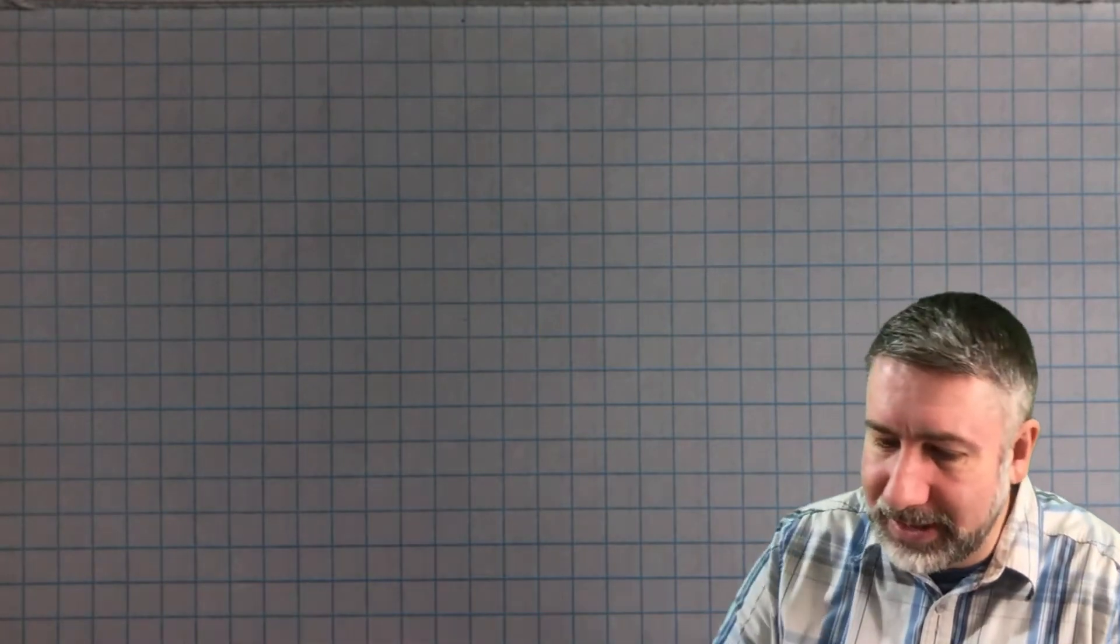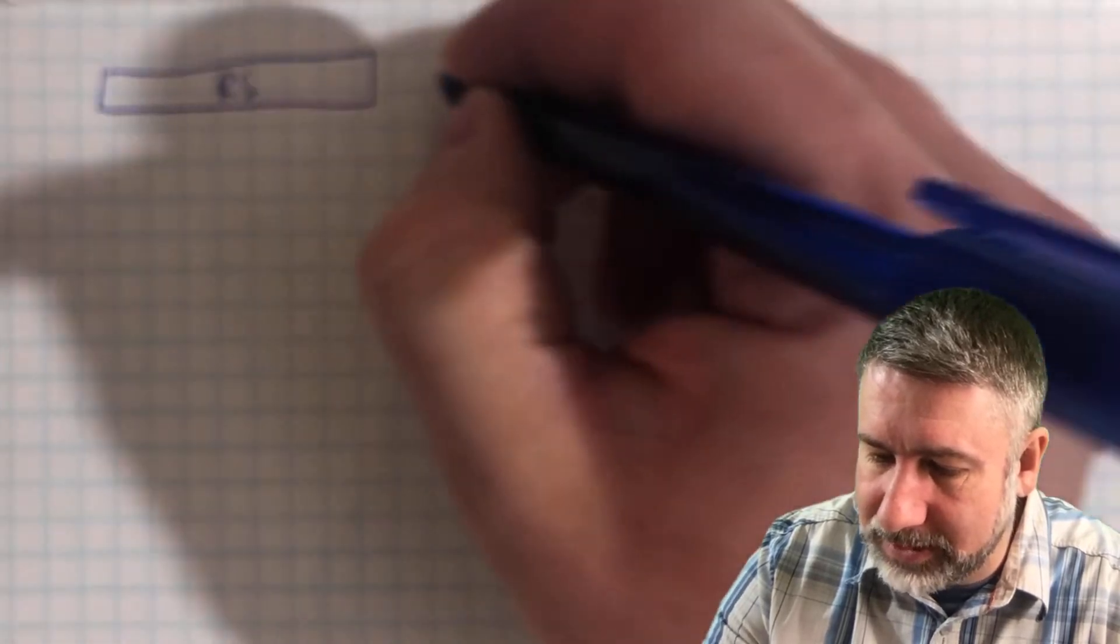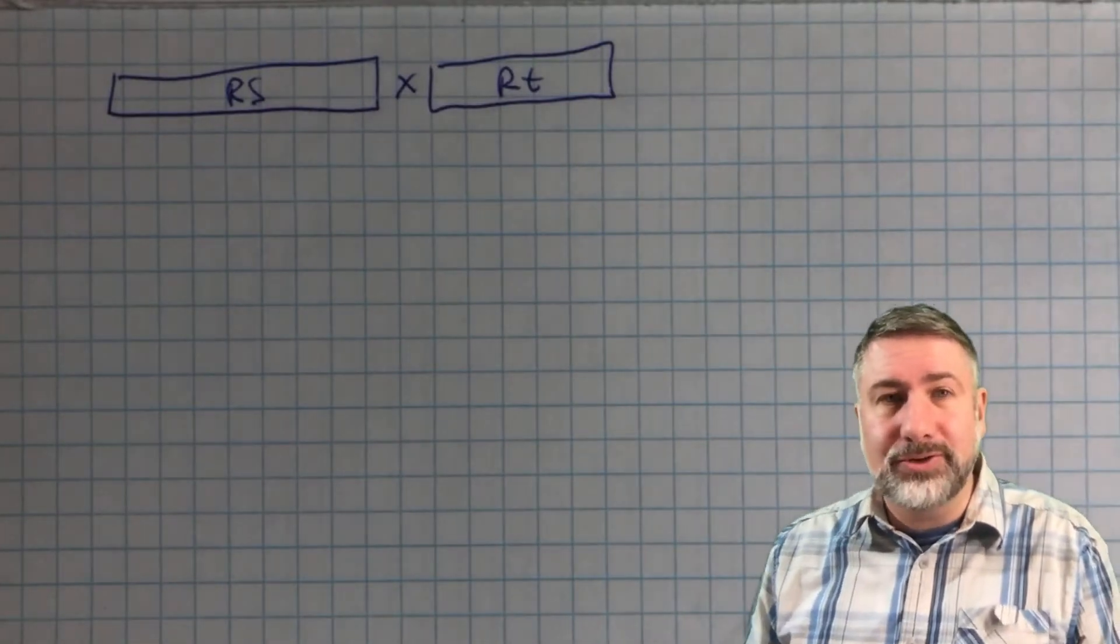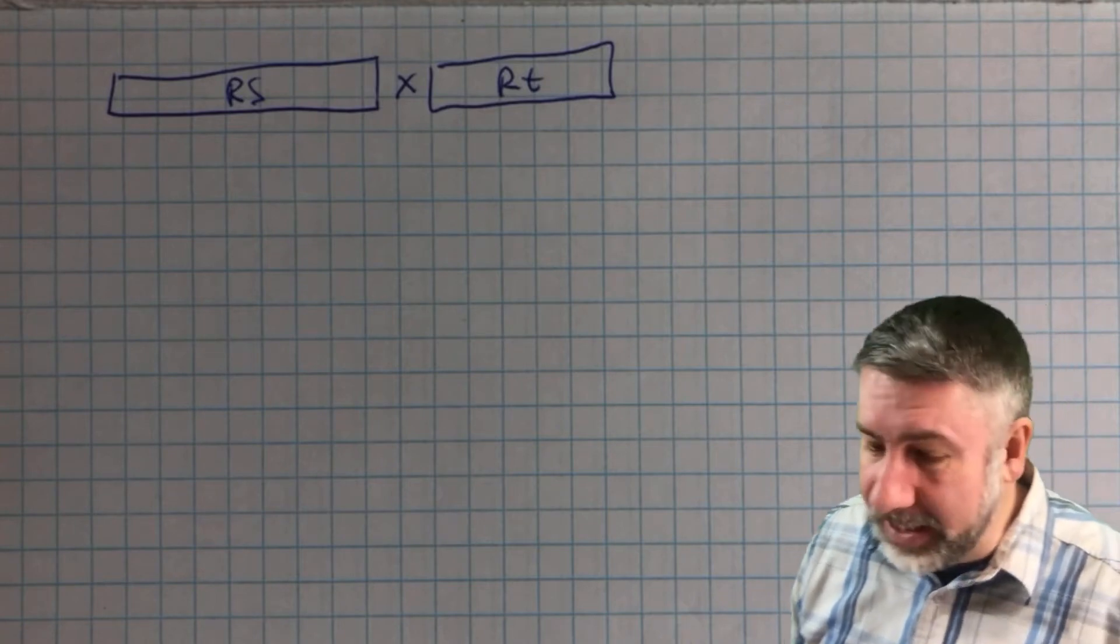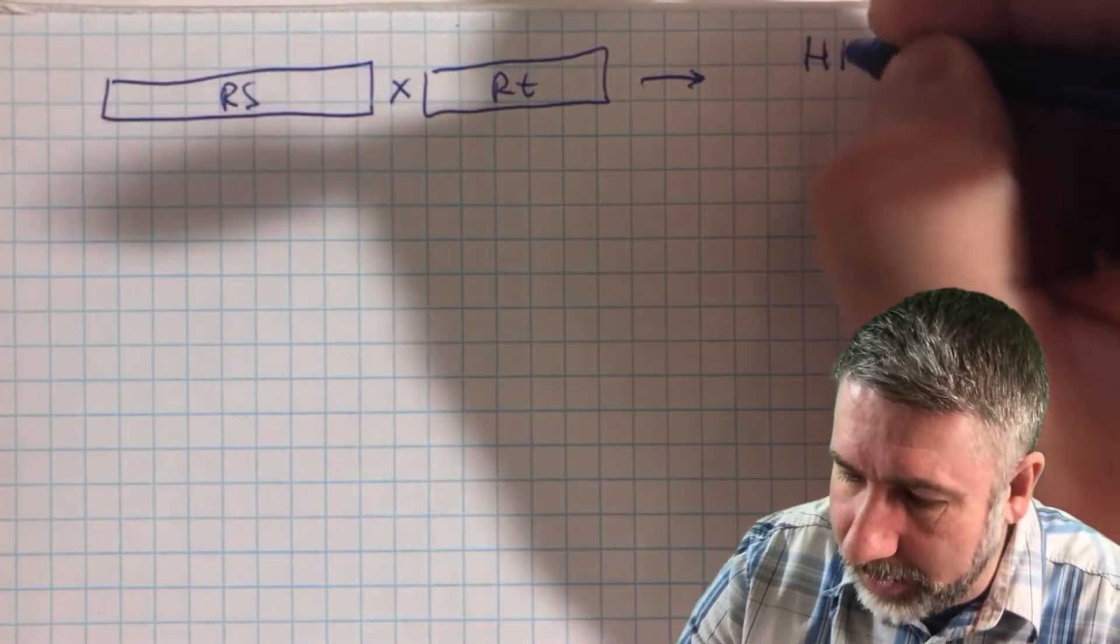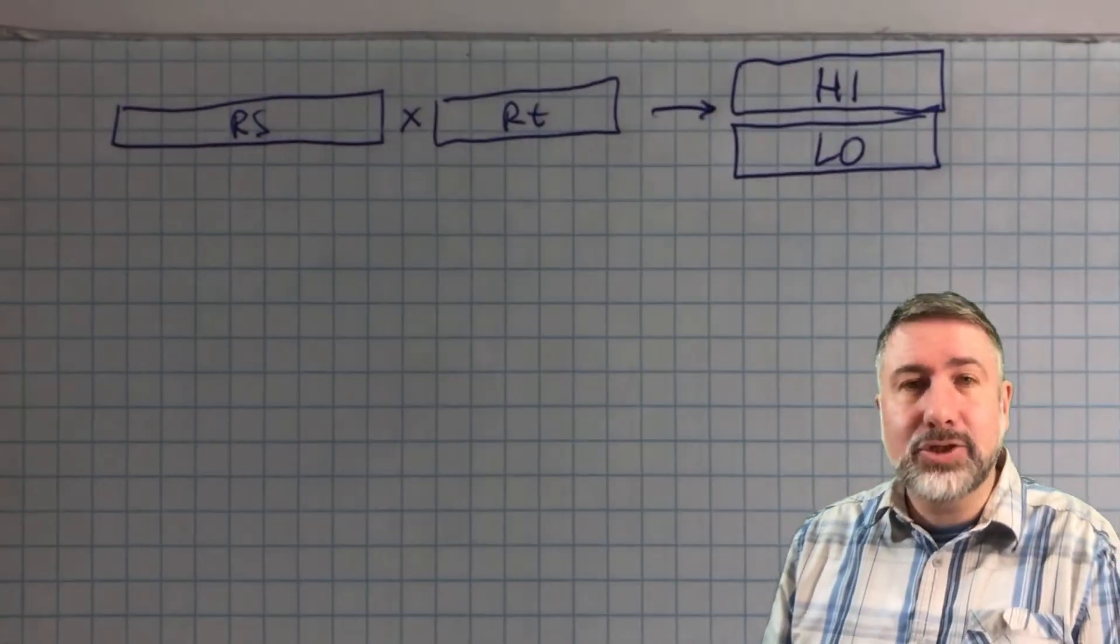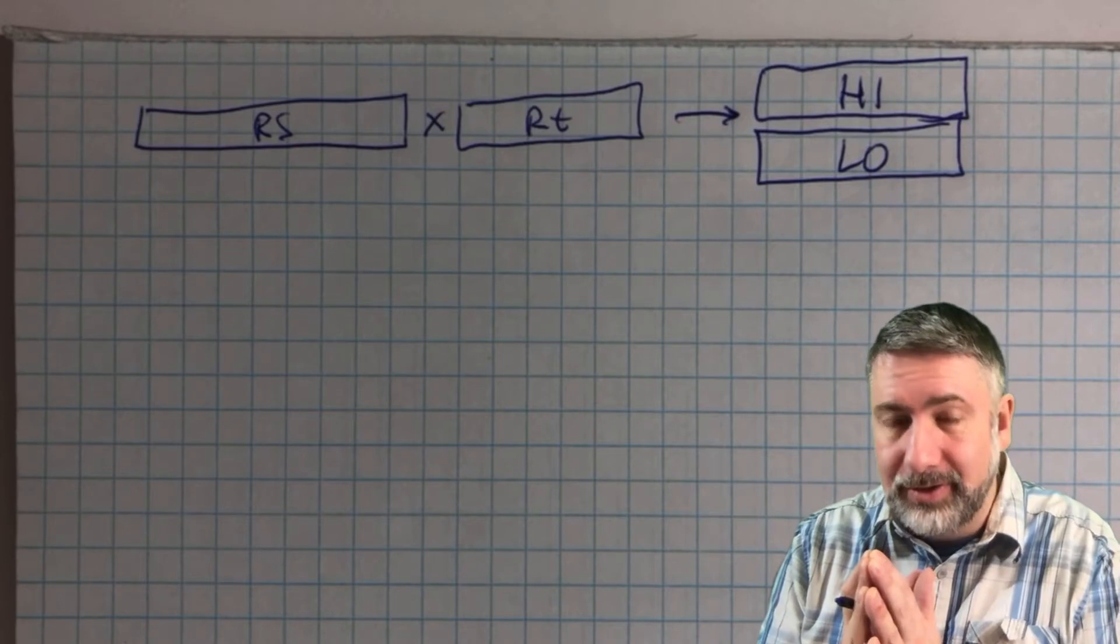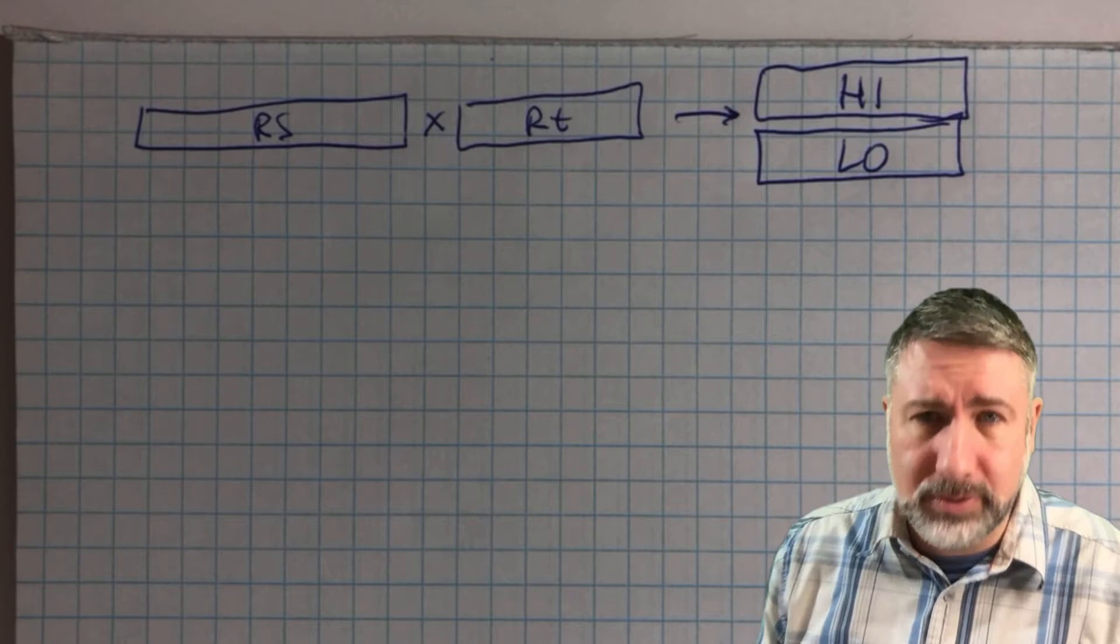And so what MIPS does is it says, if you take a 32-bit register, say register RS, and you multiply by register RT, instead of putting the result in register RD, because register RD is potentially not big enough, we're going to put the result into two new special registers that we're going to build, high and low. And these two registers together are going to make a 64-bit result. You can combine them together and you can manipulate them as if they were a 64-bit number.